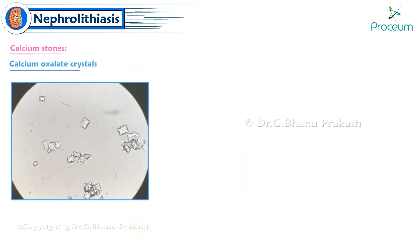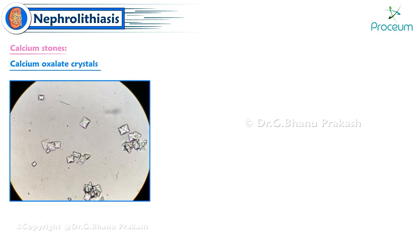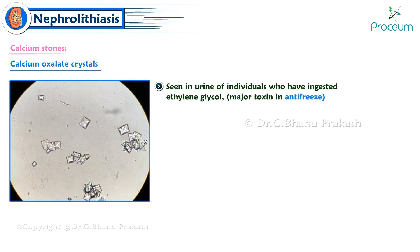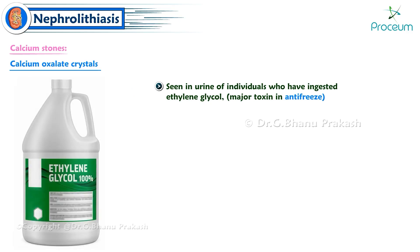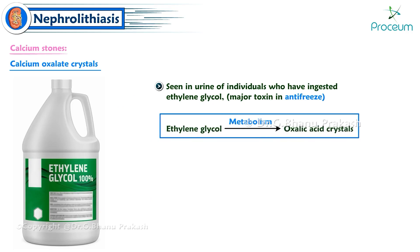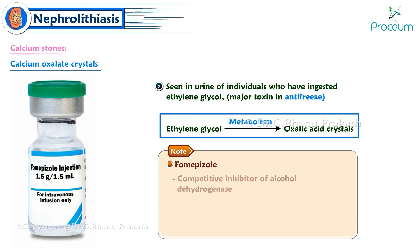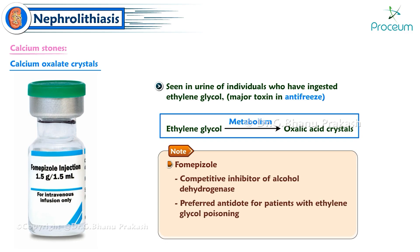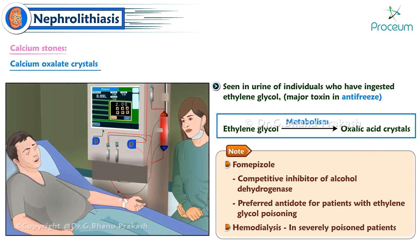Calcium oxalate crystals are classically seen in the urine of individuals who have ingested ethylene glycol, the major toxin in antifreeze. These crystals are formed from the metabolism of ethylene glycol to oxalic acid. Note: fomepizole, a competitive inhibitor of alcohol dehydrogenase, is the preferred antidote for ethylene glycol poisoning; hemodialysis can be added in severely poisoned patients.